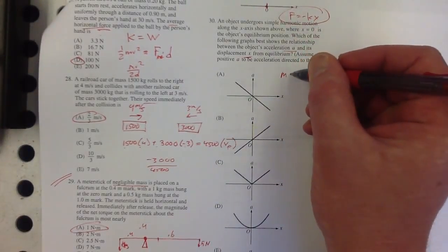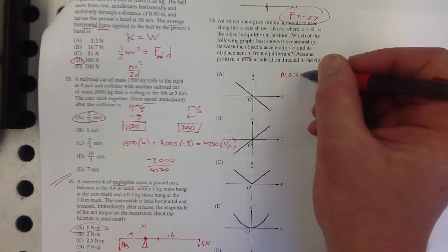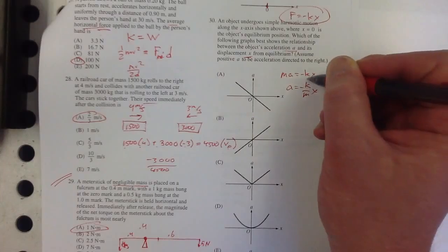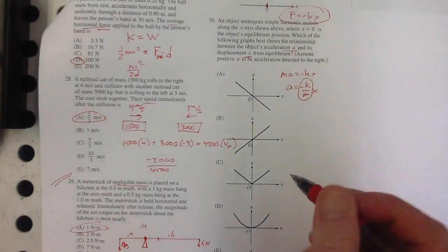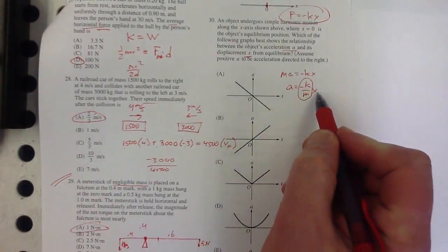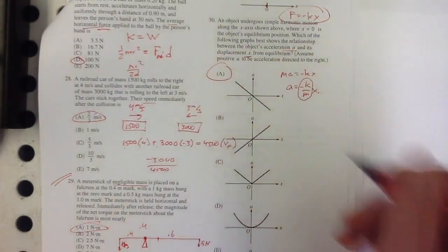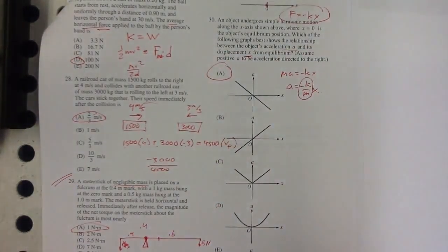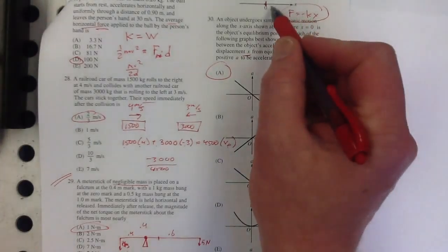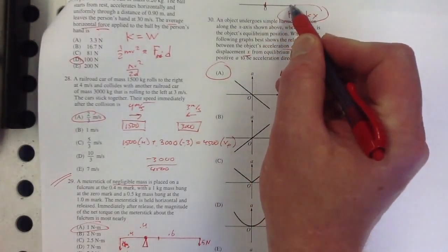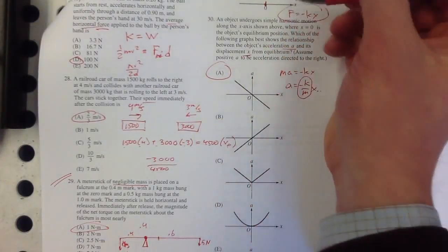Number 29: a meter stick of negligible mass is placed on a fulcrum at the 0.4 meter mark, with a 1 kilogram mass hung at the 0 mark and a 5 kilogram mass hung at the 1 meter mark.